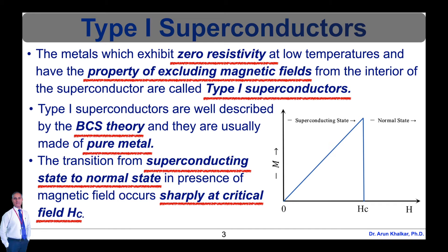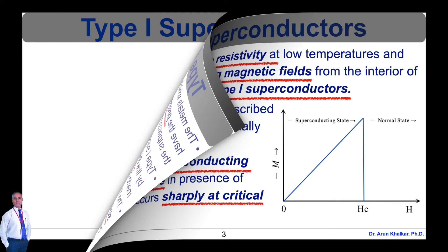In type 1 superconductors, the transition from superconducting state to normal state in the presence of a magnetic field occurs sharply at the critical field HC, as shown in this diagram.